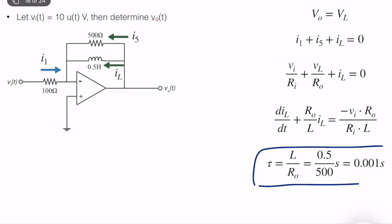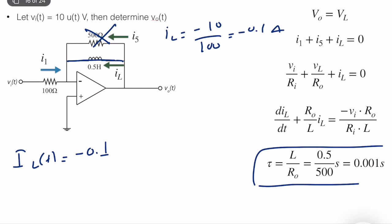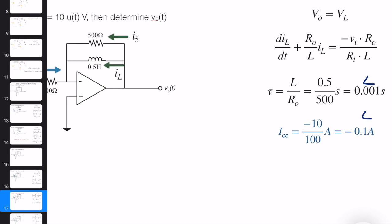This is one way of computing the steady-state current directly from the differential equation. We can also use the steady-state condition where the inductor becomes a short circuit, eliminating the resistance. In that case, IL equals minus V_I divided by 100, which equals minus 10 divided by 100, giving minus 0.1 amps. So IL(t) equals minus 0.1·(1 minus e to the power minus 1000·t).